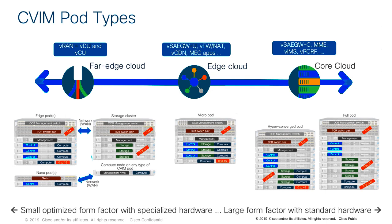Going to a somewhat more optimized version, even closer to the edge — and this is typically where you start to see virtual radio access network workloads — that's what we call the edge pod. An edge pod is basically an optimization of the micro pod in the sense that we've taken out storage components. With an edge pod, we no longer run local storage and depend on a centralized storage cluster for our edge compute nodes to access their image repositories. This is generally fine, especially for virtualized network functions that typically don't need persistent storage and only need storage when booting up an instance.